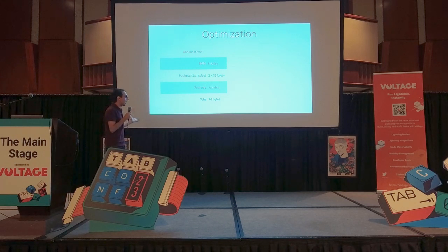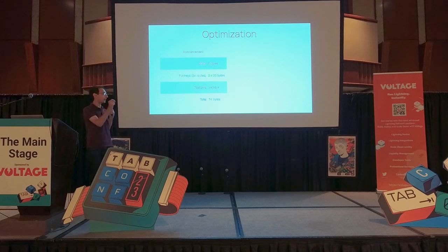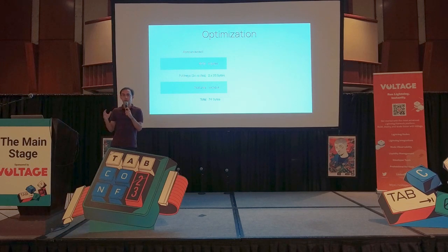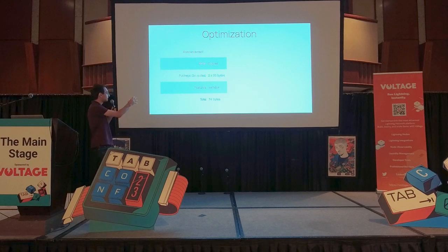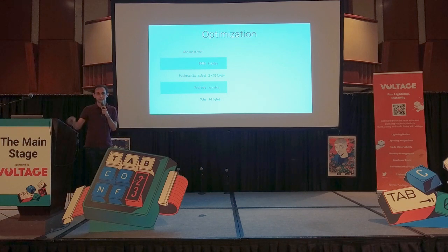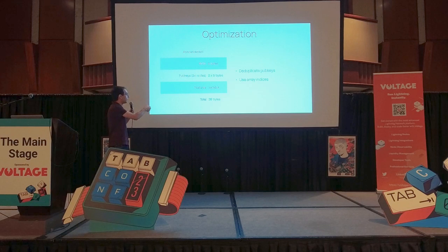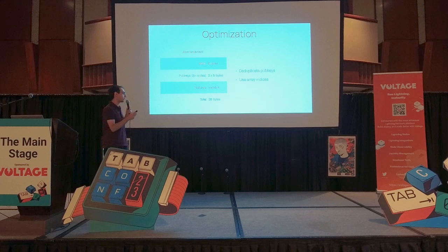As it happens, there is a way to optimize that. Instead of sending the entire public key or both public keys in each channel announcement message, we can create a local lookup — an array of all the public keys included in our gossip data. Then, instead of sending the pub keys, we simply send an index. The index can be a big-size value, as you know from the plugin protocol. That way, we reduce it from 33 bytes per key to up to 9 bytes in the worst-case scenario.